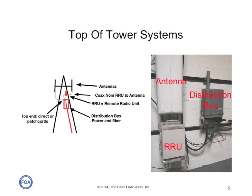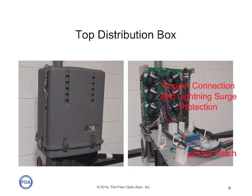Here's an example of some actual hardware installed in a teaching lab. To the left is a distribution box that terminates the fiber and copper conductors and breaks out into two separate power and signal cables to the remote radio unit, or RRU, that drives the antenna over a coaxial cable. The distribution box has two sections: a fiber section with a patch panel to connect the cable coming up the tower to patch cords taking signal to each of the remote radio units, and a copper section with power connections for each of the RRUs and lightning surge protection, which is necessary at the top of the tower.